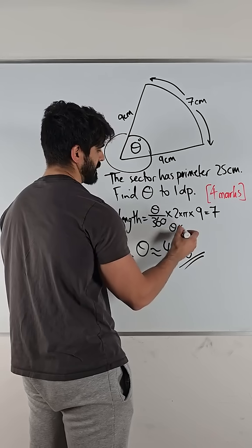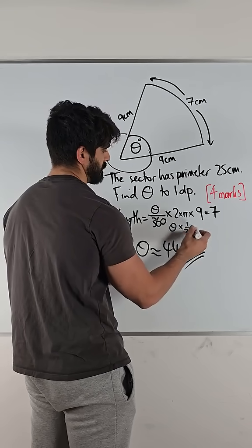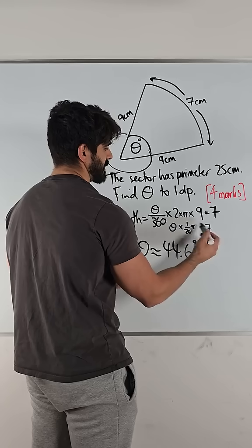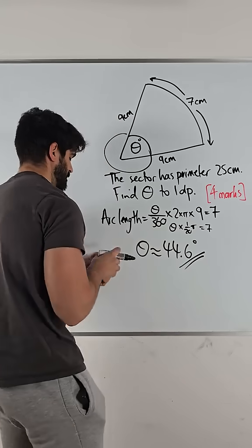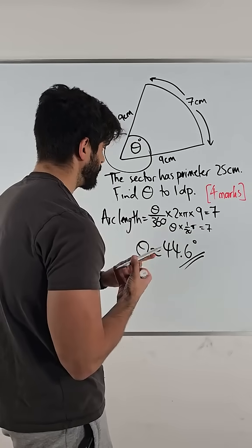So what I did, I said theta times 1 over 20 pi is 7. So I did 7 divided by that answer to give me this. So actually it could be solved pretty simply.